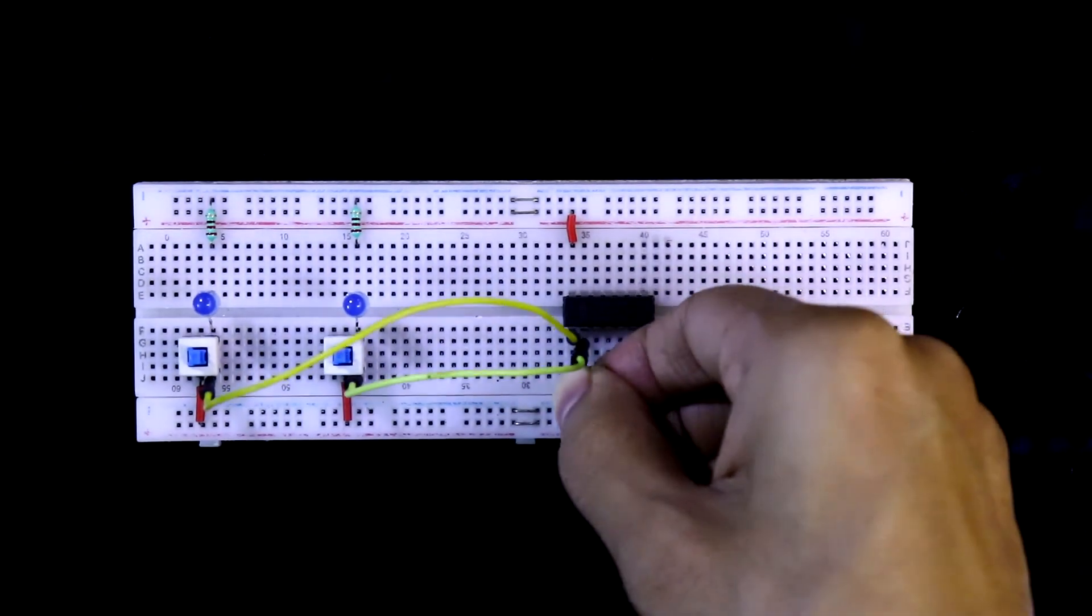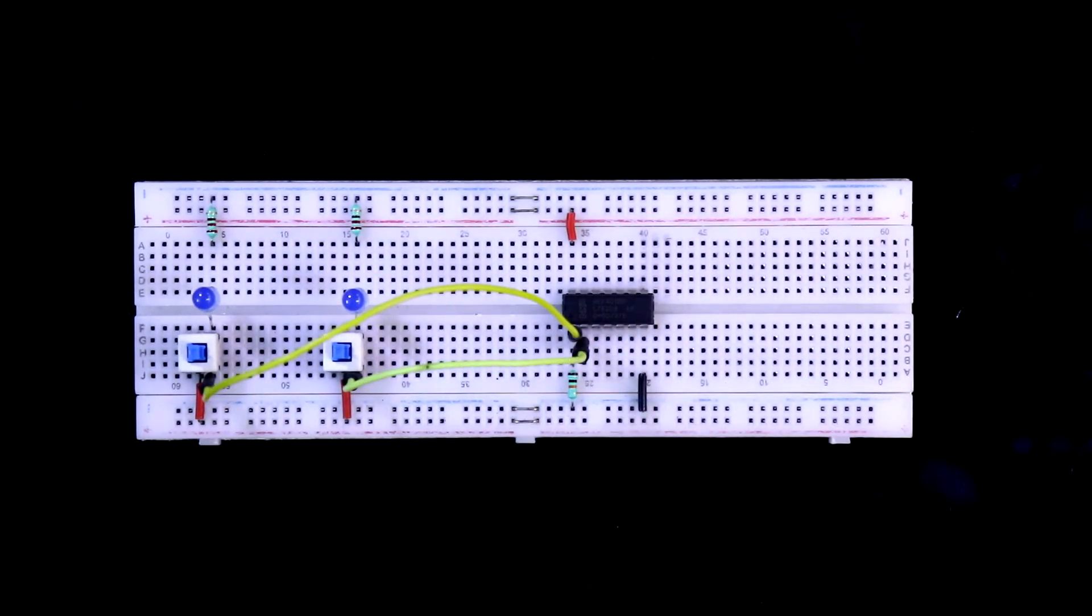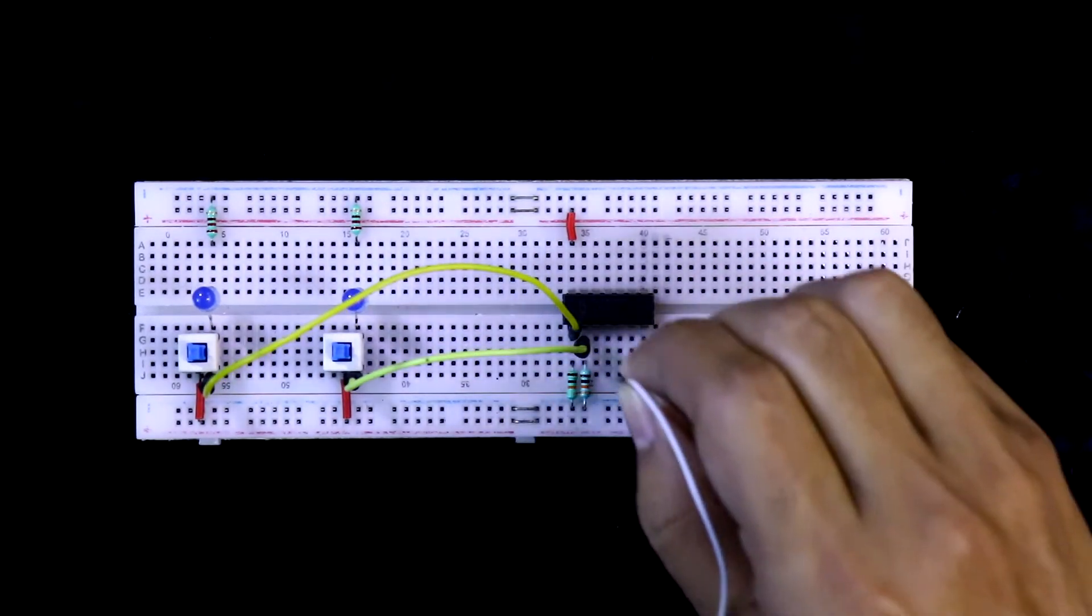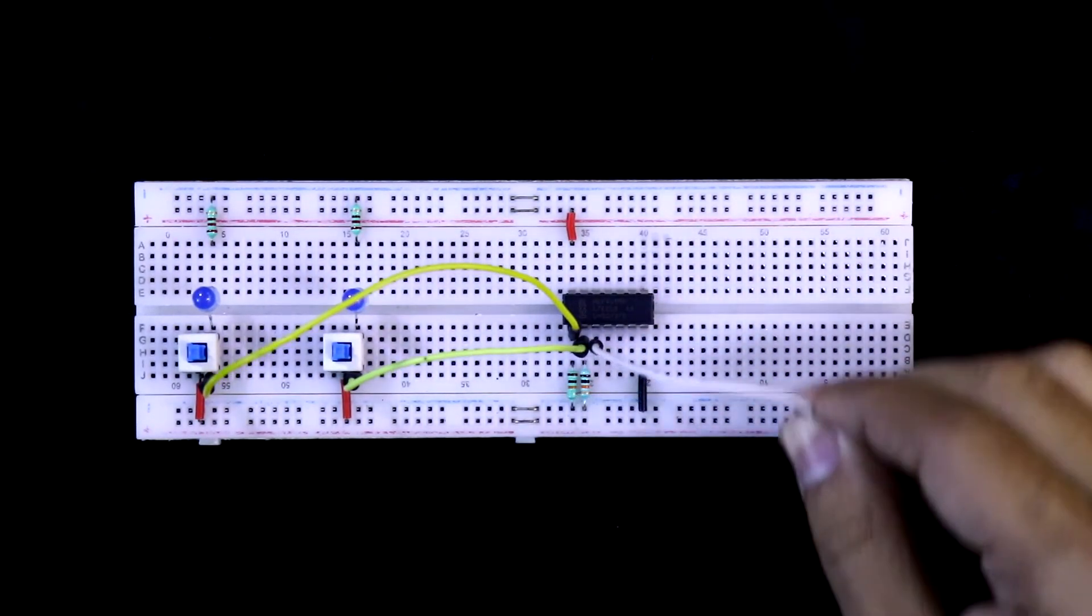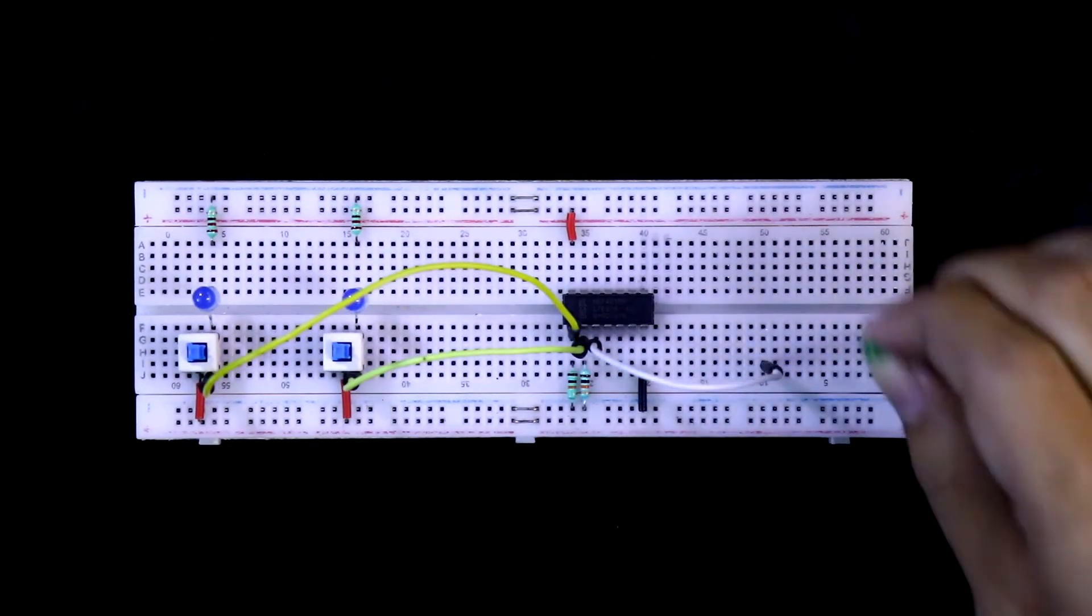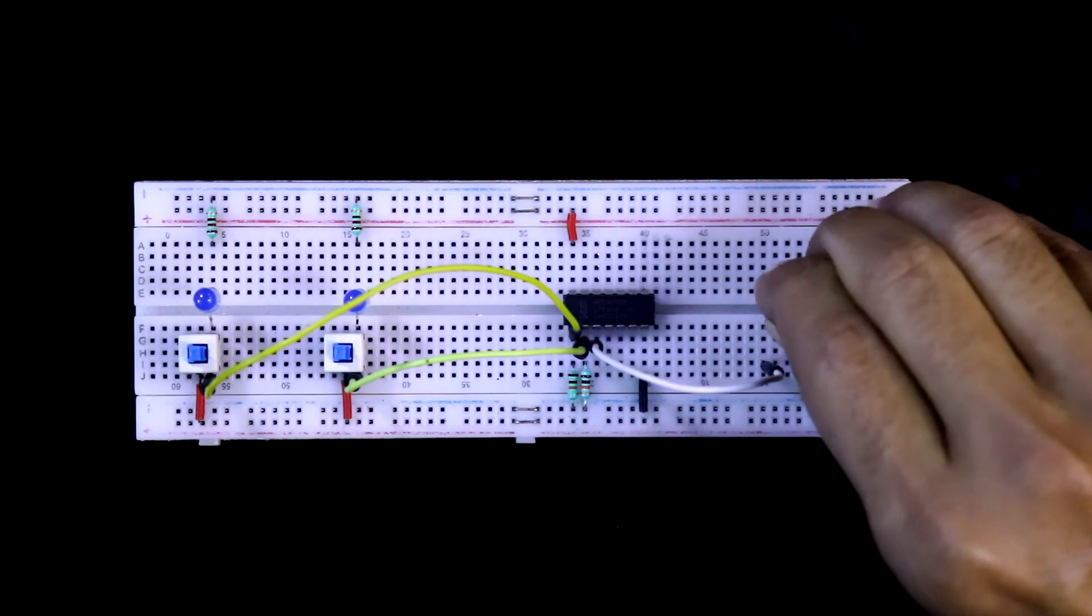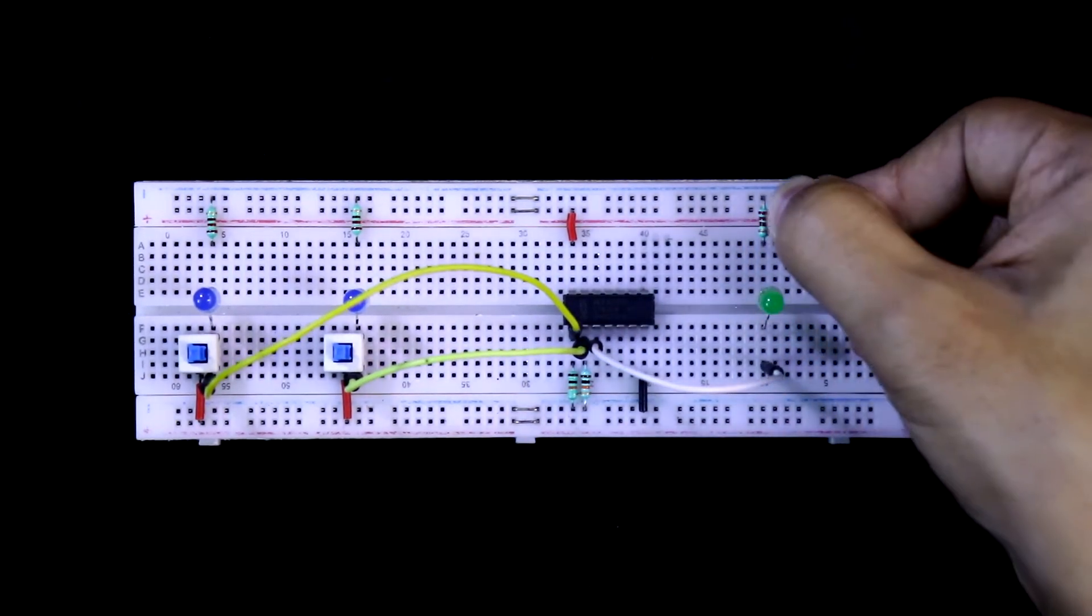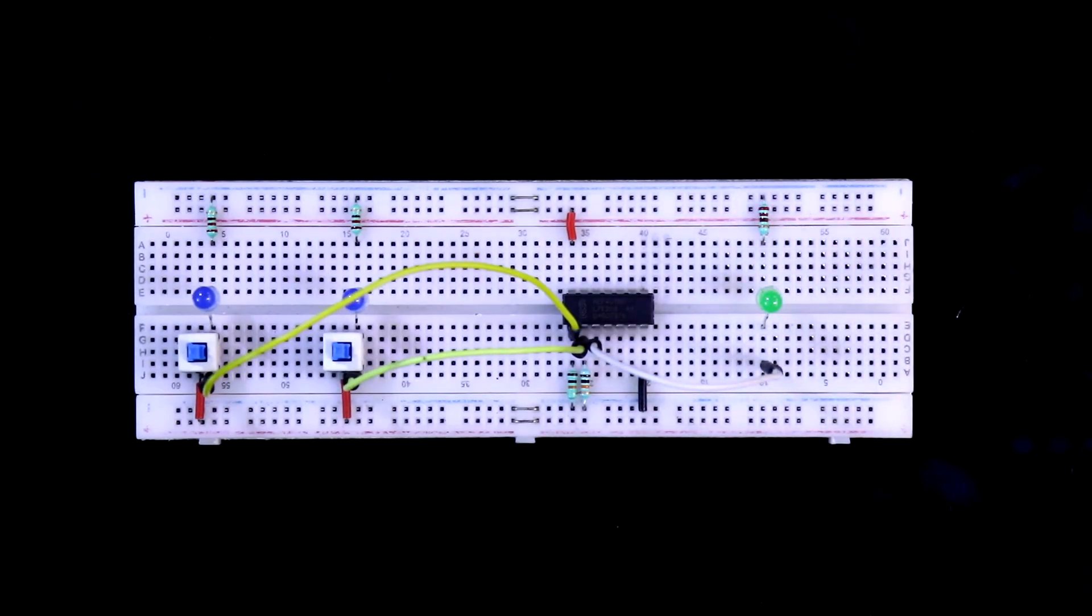With the input pin, pull down resistors are connected. It is 10K ohms resistor. Pin number 3 is output and I am connecting it here. With this, positive pin of the LED is connected and negative pin of the LED is connected with resistor and then it is connected to negative rail.